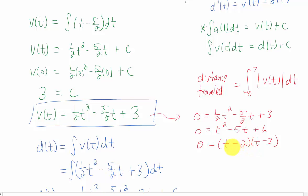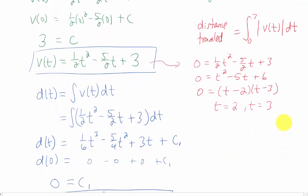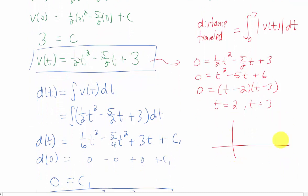If it doesn't, you can always use the quadratic formula here. But I'm getting that this graph crosses the x-axis at time equals 2 and time equals 3. What that tells me is that I can get a quick sketch of our velocity graph.